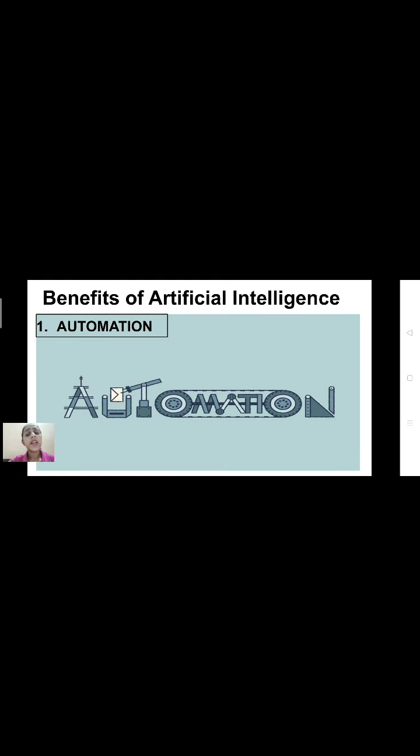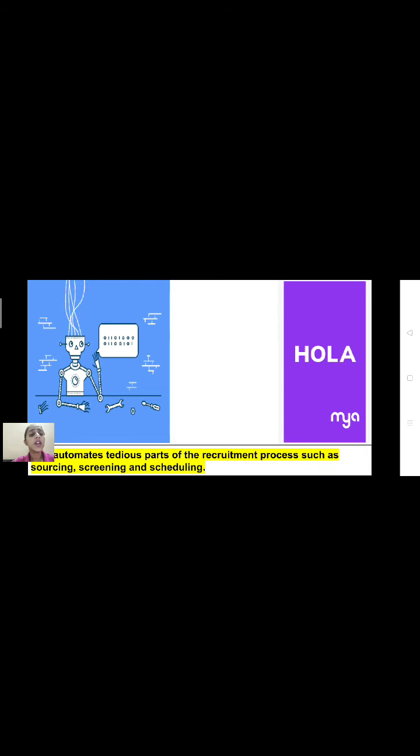Benefits of artificial intelligence: when concepts of AI, deep learning, and machine learning are applied to our personal lives, they make us smarter and more productive. The first benefit is increased automation. AI can automate anything ranging from extreme labor tasks to the recruitment process, freeing employees from tedious manual tasks to focus on complex work. A great example is the conversational AI recruiter called the MyA app, which automates tedious parts of recruitment such as sourcing, screening, and scheduling.